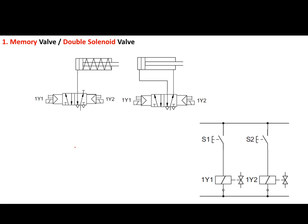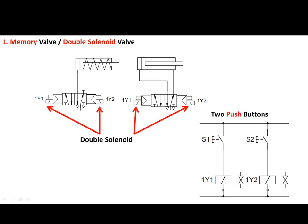The first method uses a double solenoid valve with two push buttons. The double solenoid valve is what makes the signal storage possible, and it doesn't matter whether it is a single-acting or double-acting cylinder. Once one solenoid is energized, the DCV will be in the left switching position, and it maintains that position until the next signal is sent. To achieve this electrically, we need one push button for each solenoid.